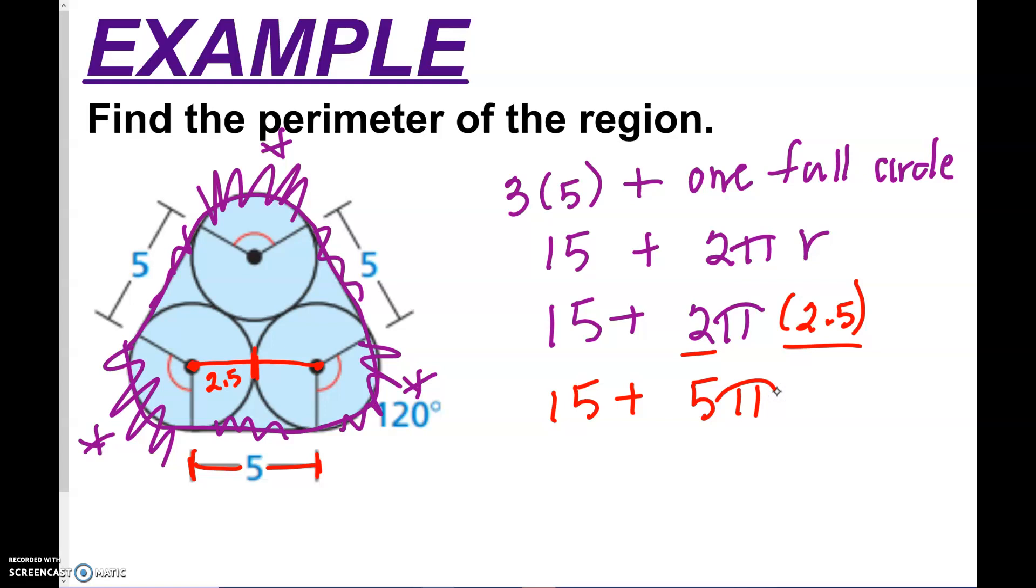And now if you just grab your calculator and add all that together, we should be able to find our answer here. So if I did it right, I think I get 30.7, and I don't see any labels. So I'm just going to call it units.